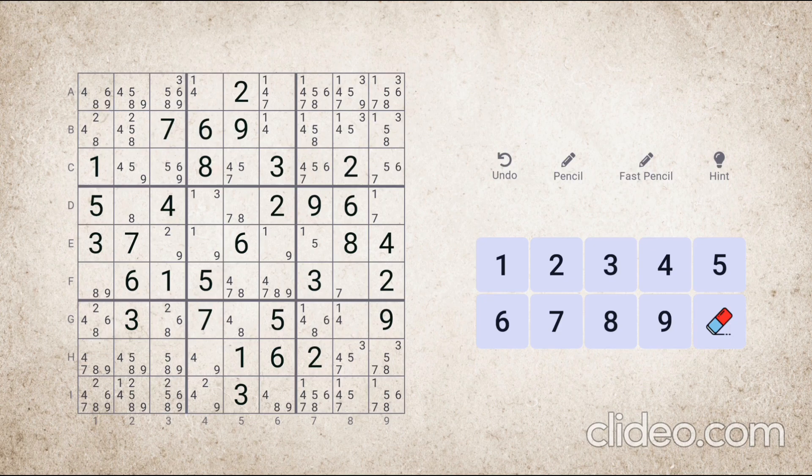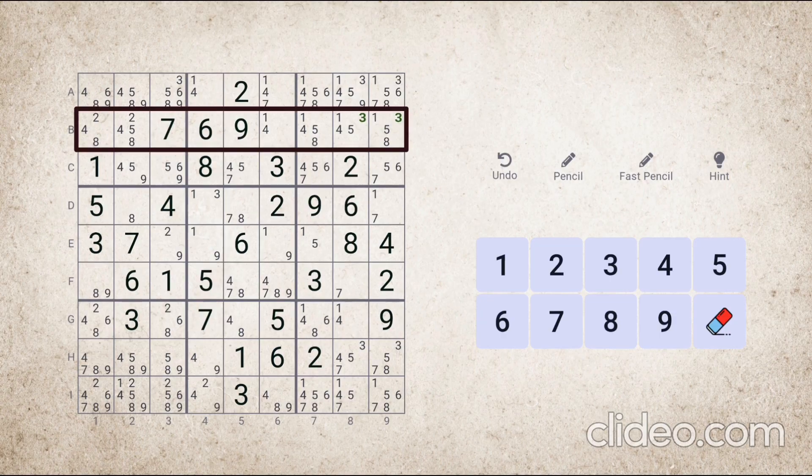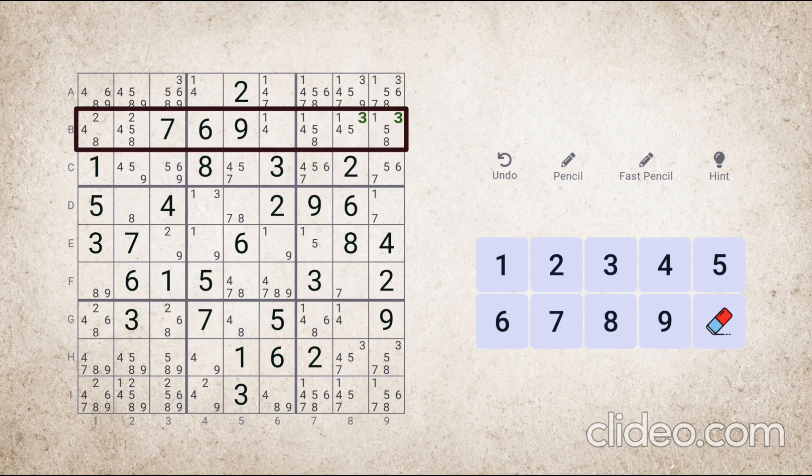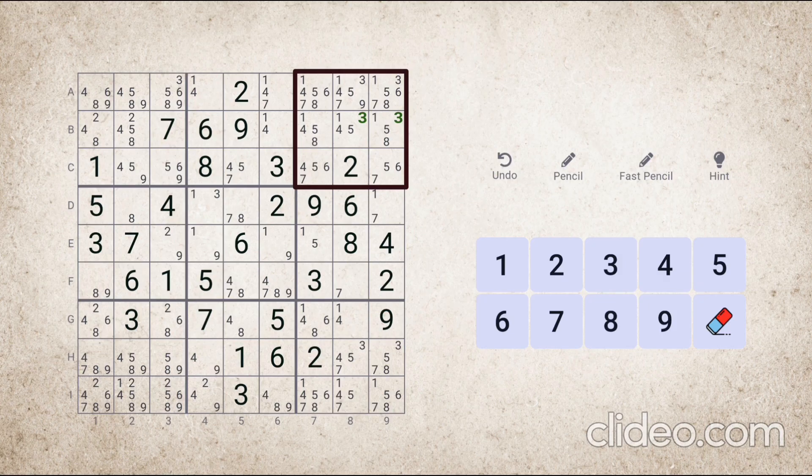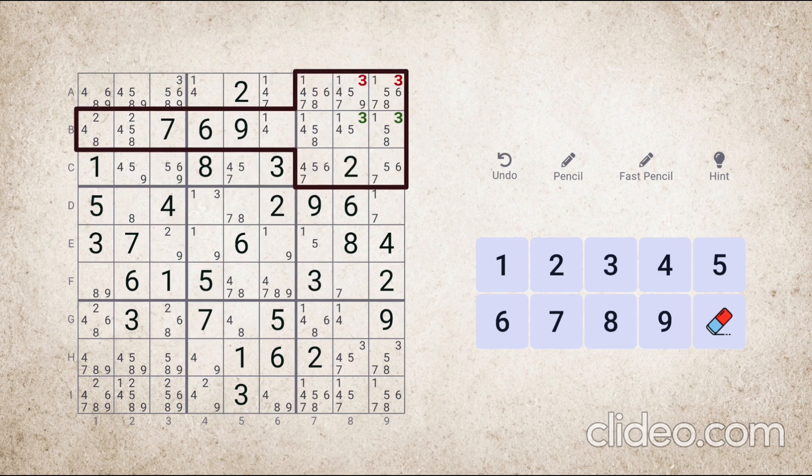Let's look at an example. In this puzzle, look at number three in this row. All the cells in this row where number three can be placed are also part of this block. So according to the definition, number three cannot be placed anywhere in this block outside of second row. So we can remove number three from these cells in this block.